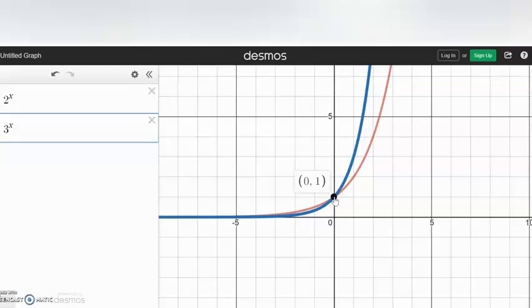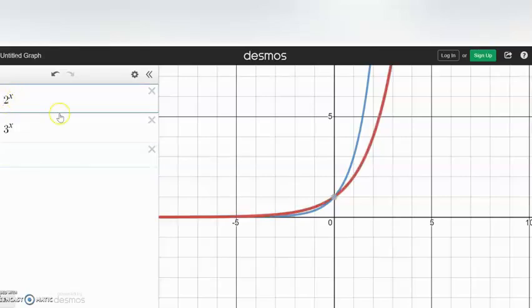But now as it goes over 1, it triples each time. So this is 3. The next one would be 9, etc. So here's what y equals 2^x looks like. Here's what y equals 3^x looks like.